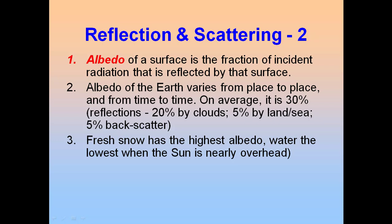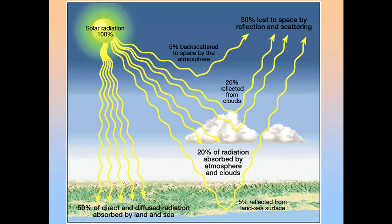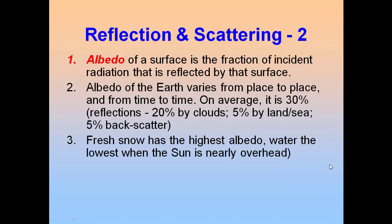This is what's known as albedo — how reflective the Earth's surface is. On average, about 30% of incoming solar radiation is scattered back out into space: 20% by clouds, 5% by land-sea surfaces, and 5% backscattered. Fresh snow has the highest albedo — it's the most reflective. Blacktop has the lowest albedo, so it is the least reflective.